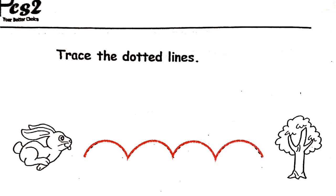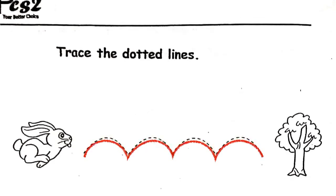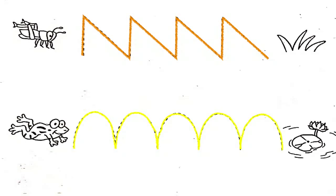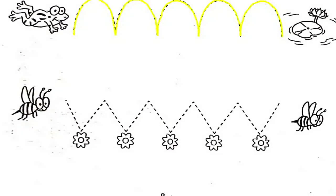The rabbit hops towards the tree. The grasshopper hops into the grass. The frog hops into the pond. The bee buzzes from flower to flower.